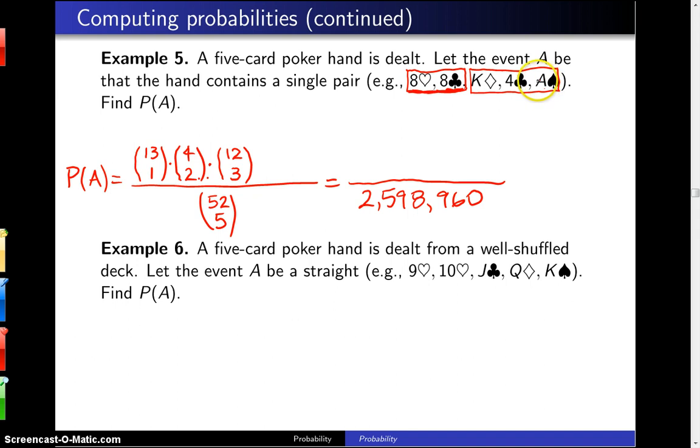But we could have also chosen a 3, a 7, and a jack. So there are 12 choose 3 different ways to select the rank of the other three cards, and notice the order isn't important. If we would have chosen ace, 4, and king, it still would have been those three ranks.